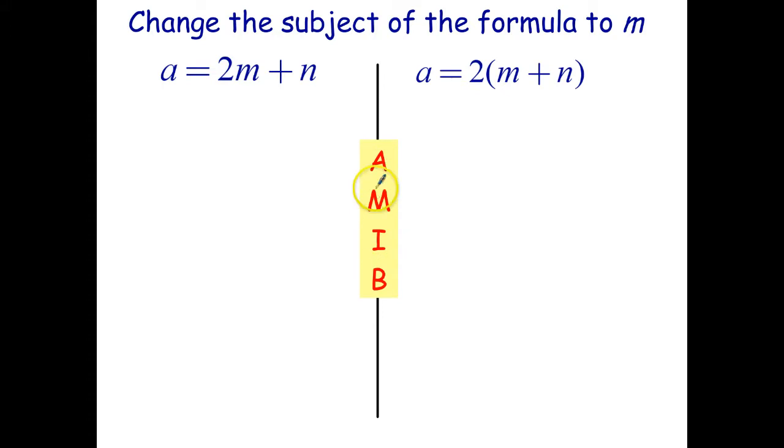Okay, quick reminder, we have to undo adding and subtracting first, and then we have to undo multiplying and dividing. So I want to make m the subject. Well, m is multiplied by 2, and then n is added. So the first thing I have to do is undo the adding by subtracting.